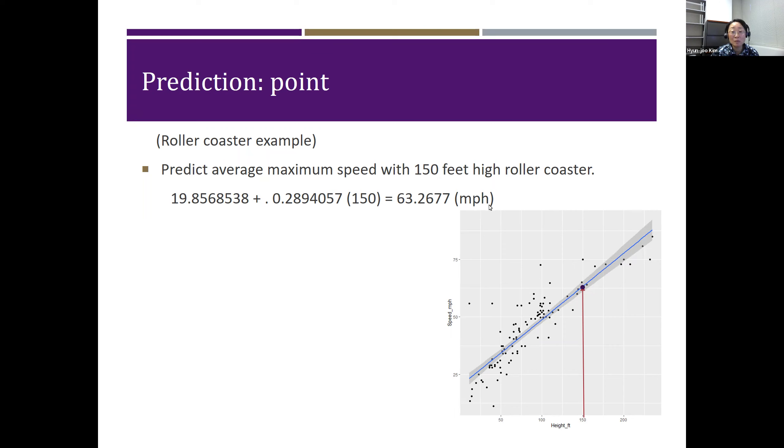On average, maximum speed with 150 feet high roller coaster is about 63.2677 mph. In the figure, this is the value on the blue regression fitted line when x is 150.